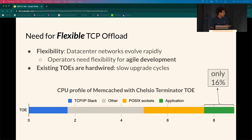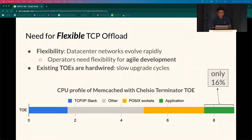This inflexibility shows in our analysis. For example, the Chelsea Terminator TCP offload engine is optimized for long bulk flows, and Chelsea performs poorly for RPCs, leaving only 16% of the total cycles for the application. Unfortunately, because it is hardwired, there is little that can be done to adapt it to RPC workloads.